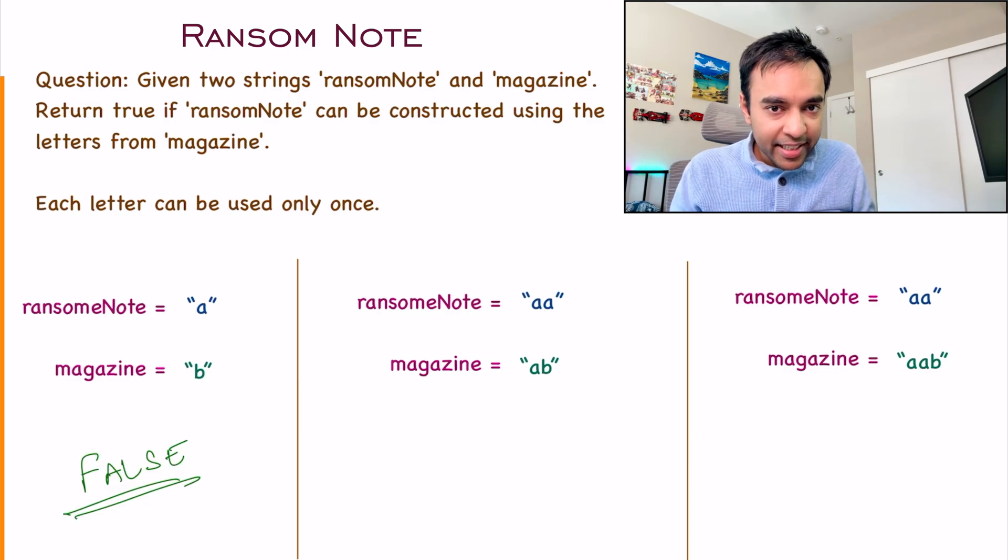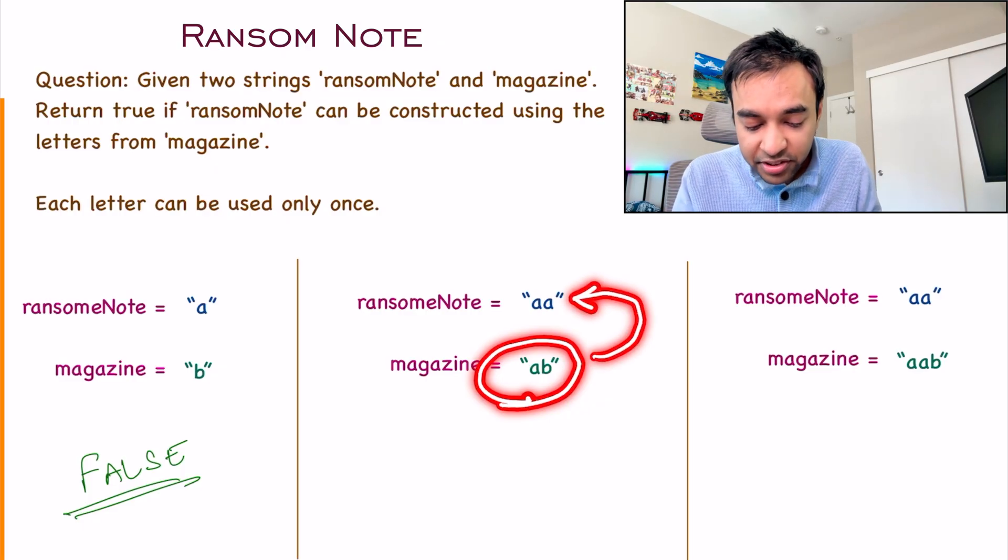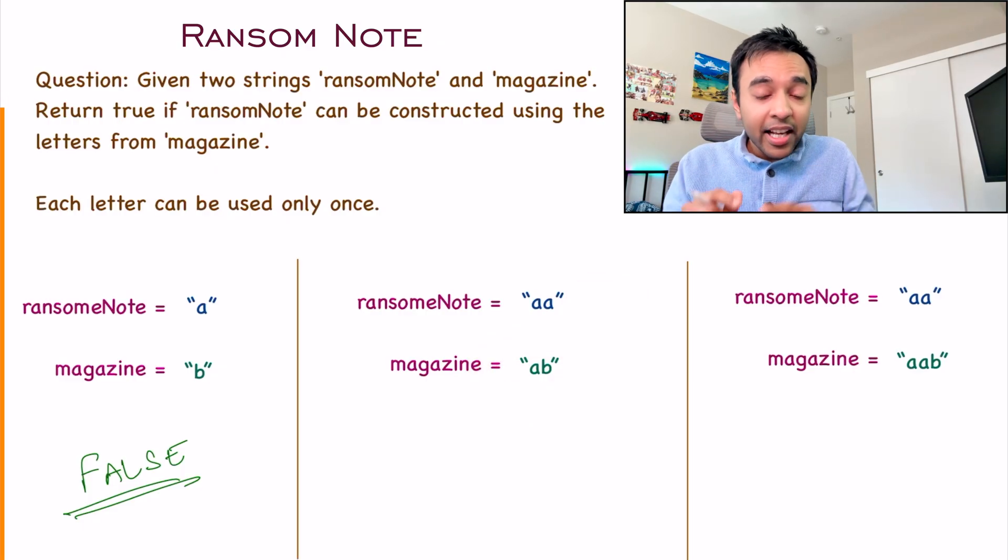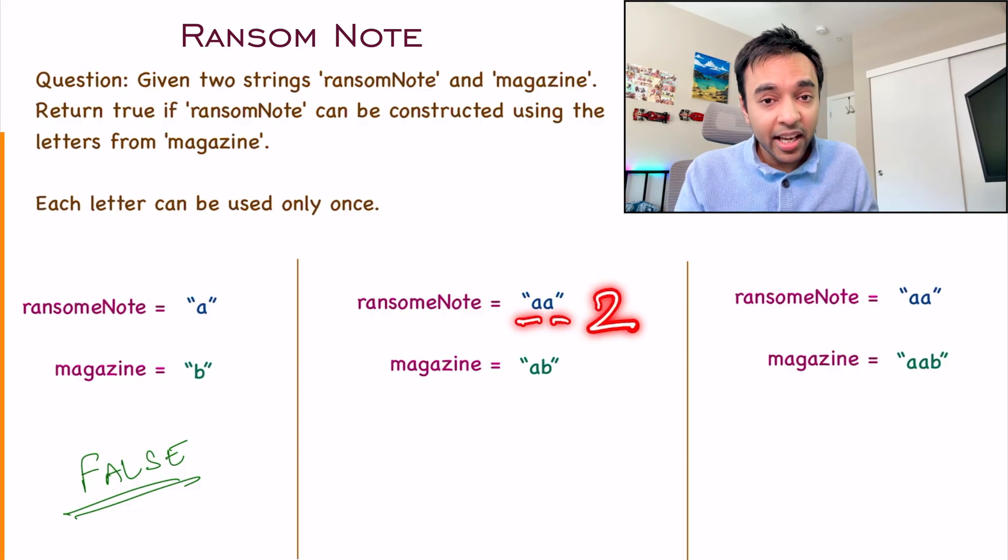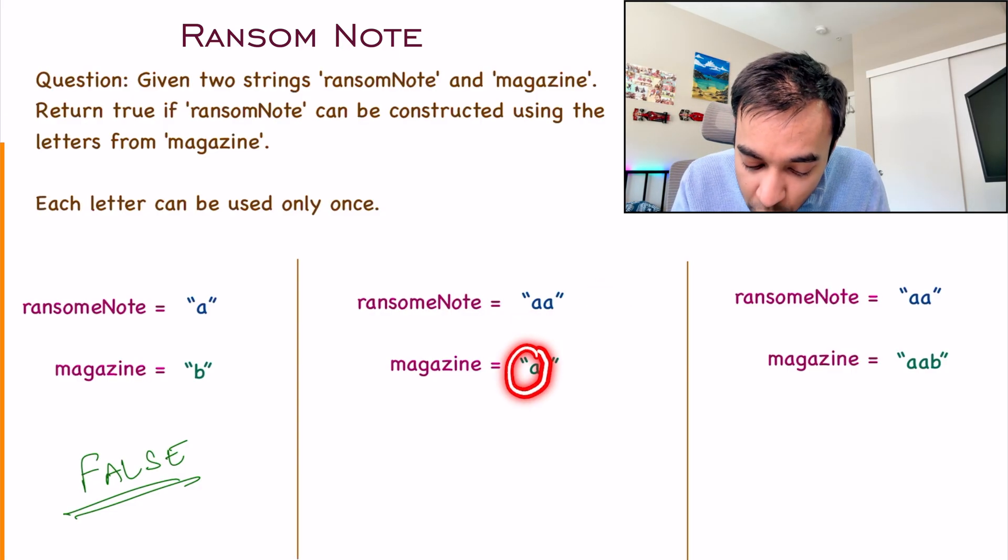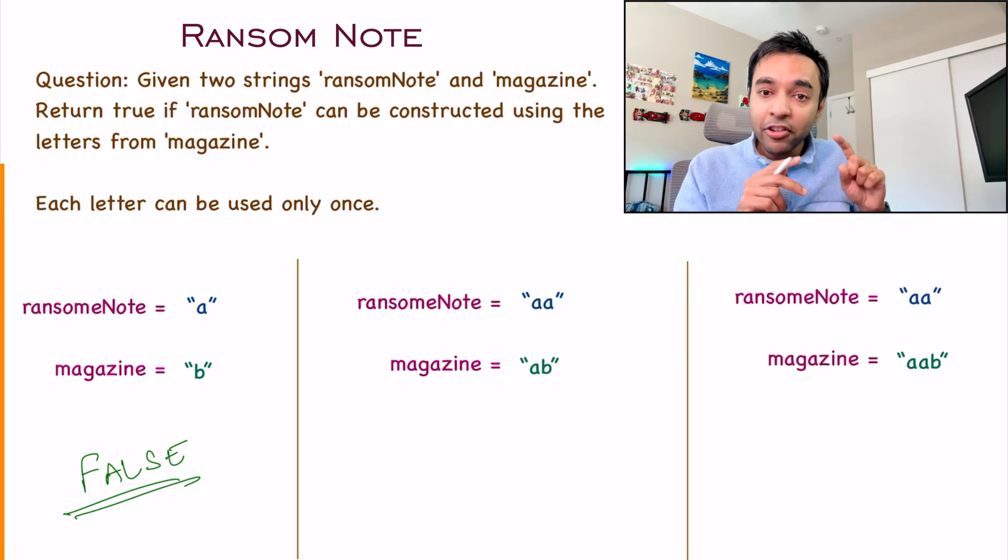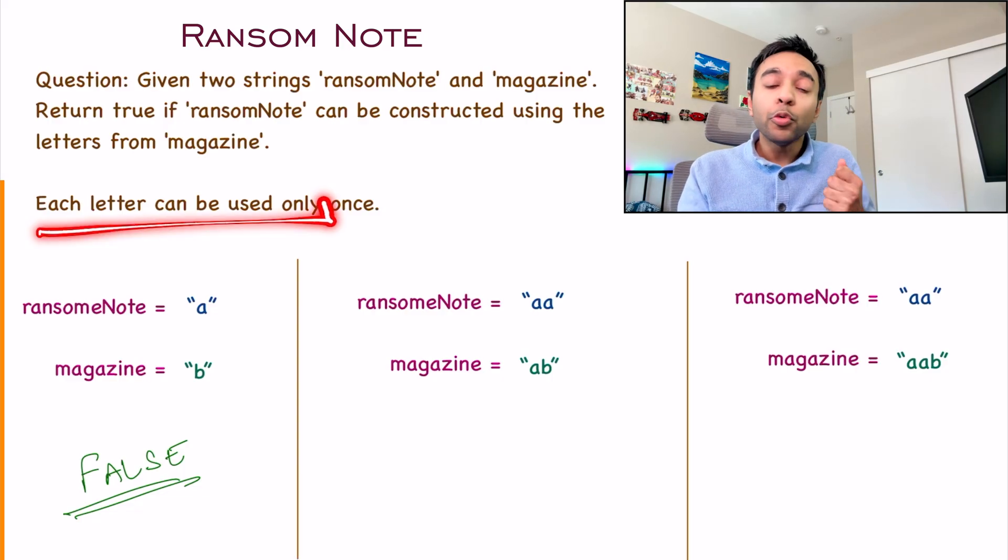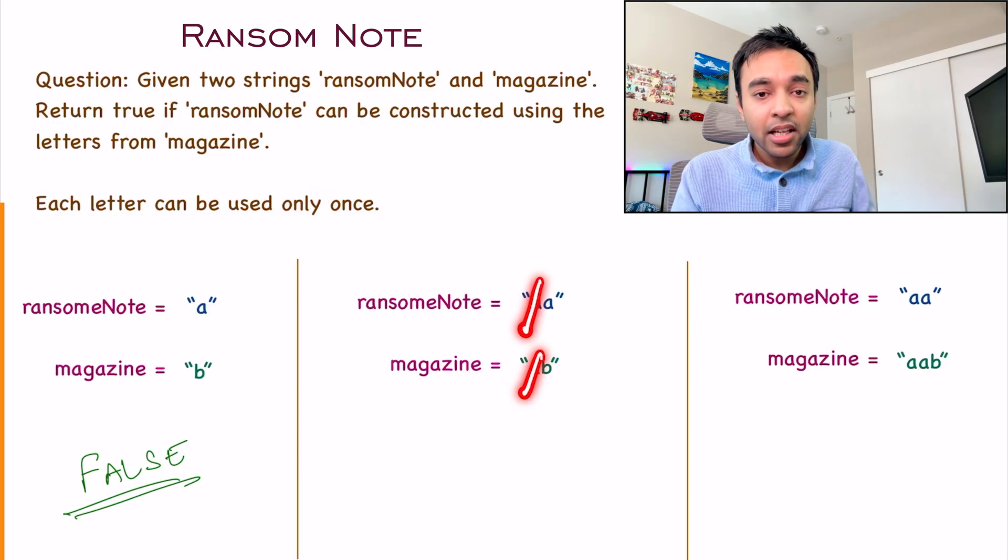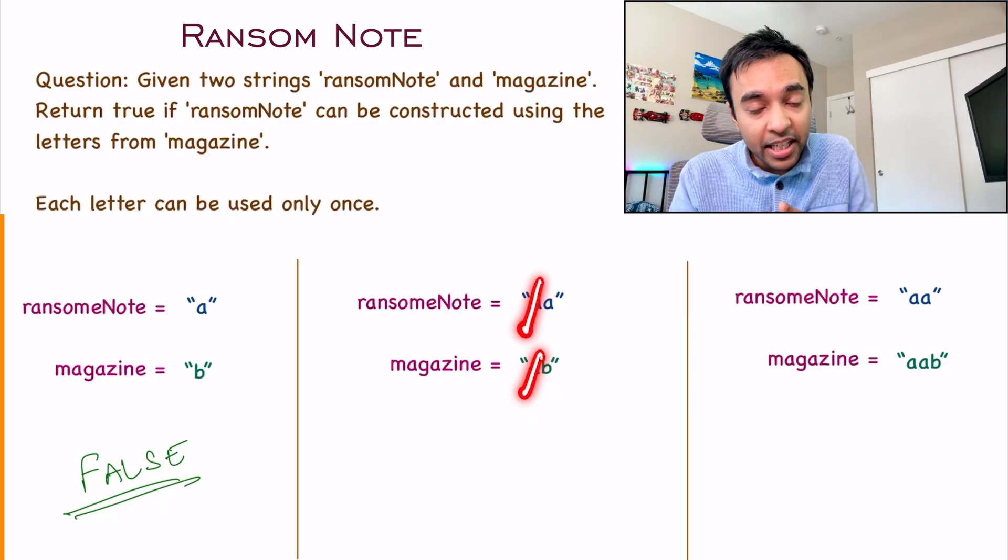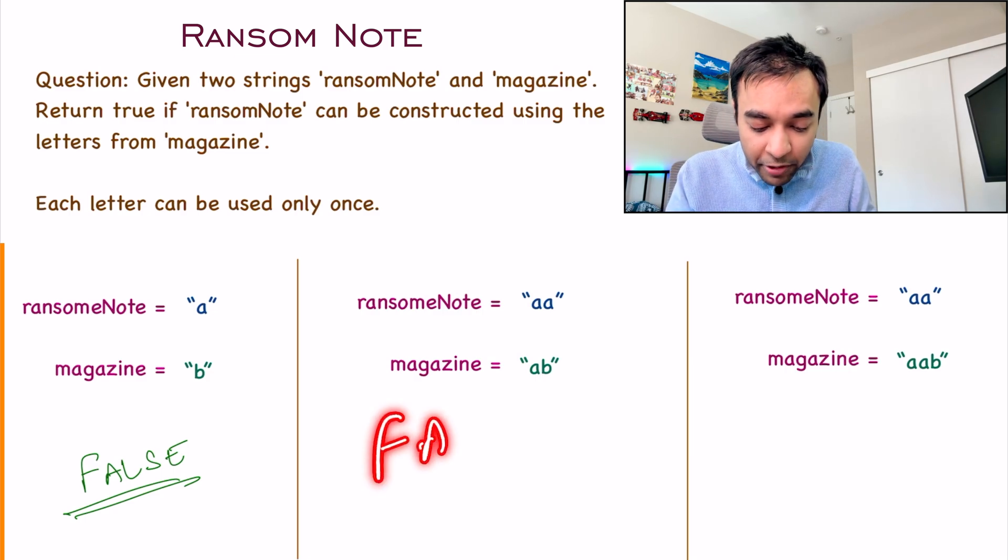Let's look at the second test case. You have two characters available this time, A and B. Can you construct this ransom note? Once again, the answer will be no. Because ransom note has two A's, and magazine has only one A available. This brings us to the next condition: each letter can be used only once. So you can use this A to cover one, but one more A is remaining. This conversion is also not possible.